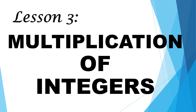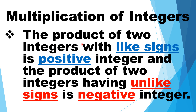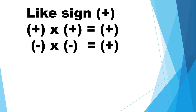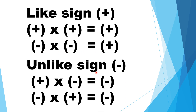Lesson 3: Multiplication of integers. The product of two integers with like signs is positive, and the product of two integers having unlike signs is negative. If like signs, the sign of the product is positive: positive times positive equals positive, negative times negative equals positive. If unlike signs, the sign of the product is negative: positive times negative equals negative, negative times positive equals negative.